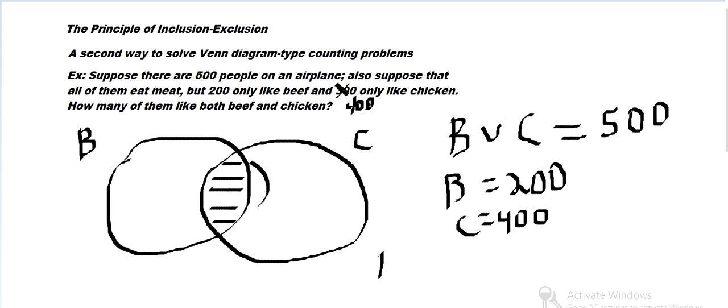So the principle of inclusion-exclusion says the number in the union is the same as the number in B plus the number in C minus the number in the intersection. Because B and C both include the intersection, adding B plus C will count the intersection twice.